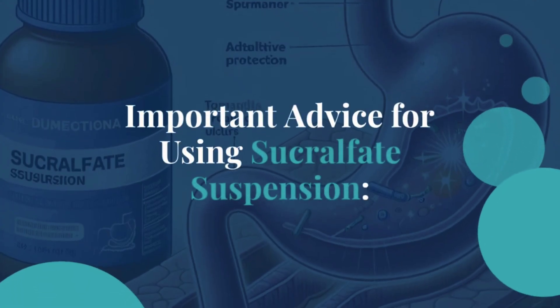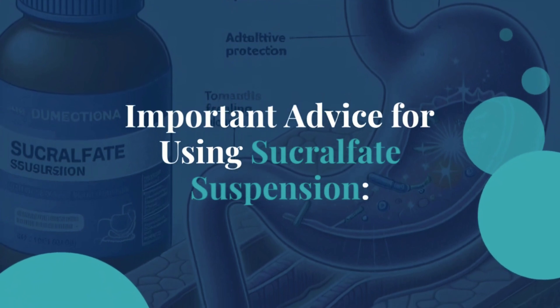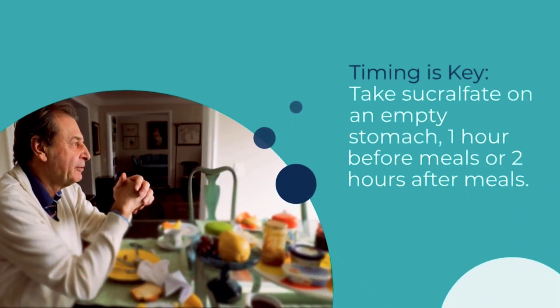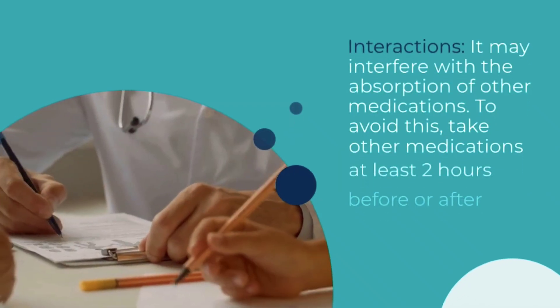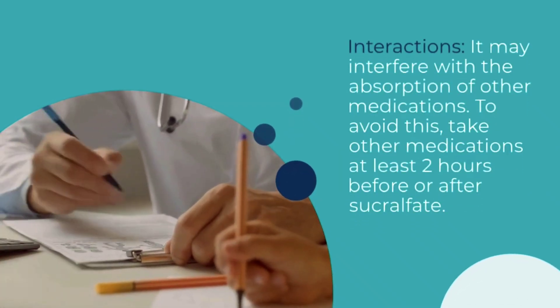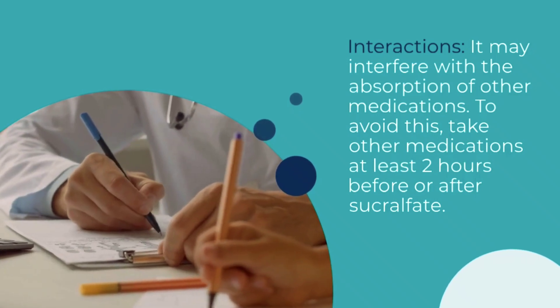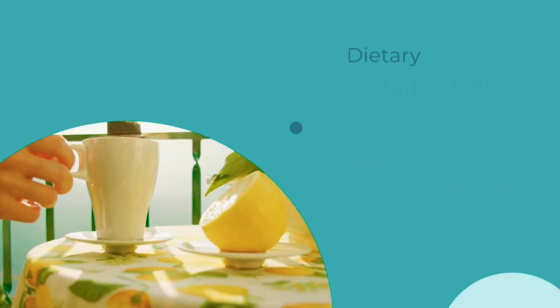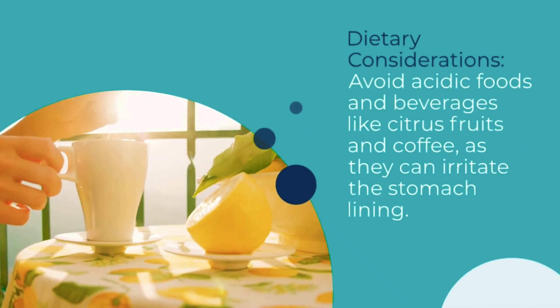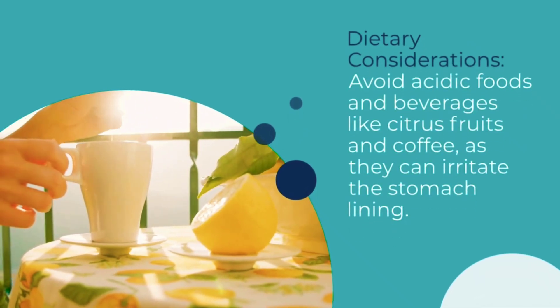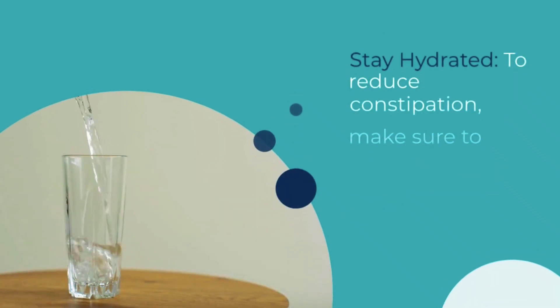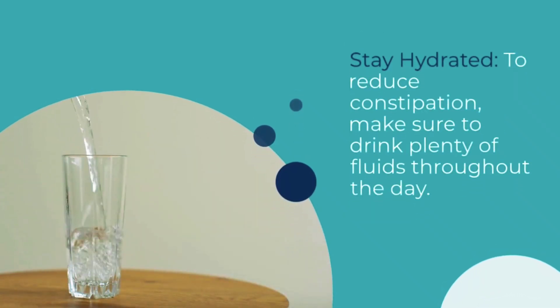Next, important advice for using sucralfate suspension. Take sucralfate on an empty stomach, one hour before meals or two hours after meals. It may interfere with the absorption of other medications, so take other medications at least two hours before or after sucralfate. Avoid acidic foods and beverages like citrus fruits and coffee, as they can irritate the stomach lining. To reduce constipation, make sure to drink plenty of fluids throughout the day.